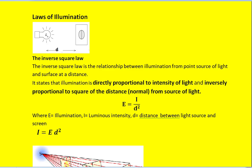Hello friends. Today I will discuss the laws of illumination. In the laws of illumination there are basically two types of laws: one is the inverse square law, the other is Lambert's cosine law. There is also another law called the cos cubed law. Let me discuss first the inverse square law.